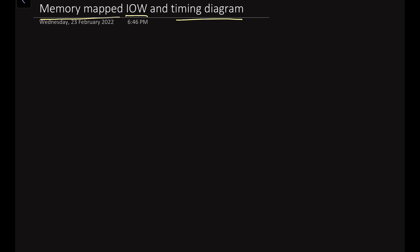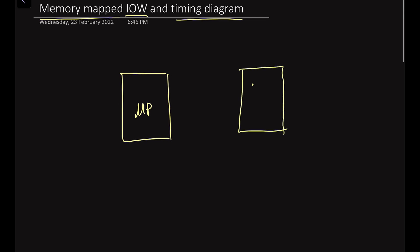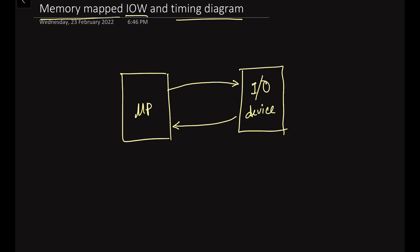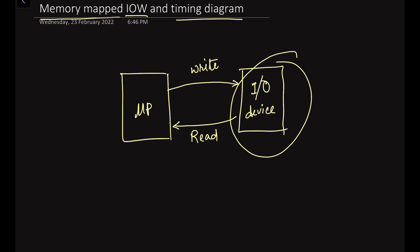Suppose we have one microprocessor unit and one input output device. The communication between these two units involves data transfer. When data is transferred from the microprocessor unit to the input output device, it is called the write operation. When data is transferred from the input output device to the microprocessor unit, it is called the read operation.